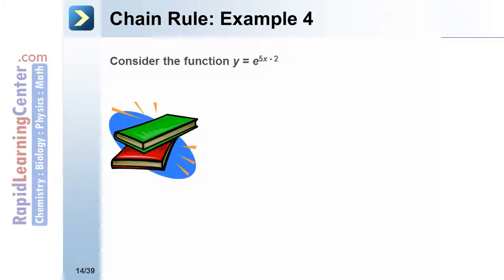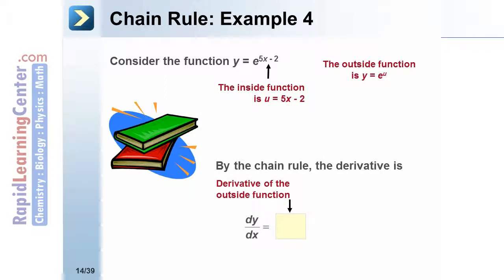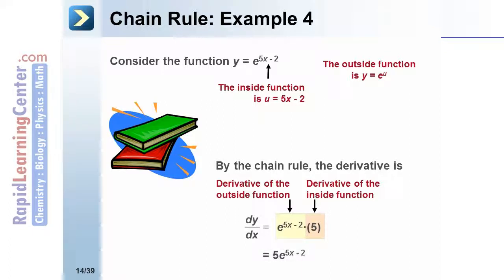Let's look at another example of the chain rule. Consider the function y equals e raised to the 5x minus 2 power. The inside function is the exponent 5x minus 2, while the outside function is e to the u. Applying the chain rule, the derivative of the outside function is e to the u, which since it is its own derivative, gives e to the 5x minus 2. The derivative of the inside function, 5x minus 2, is 5. Simplifying gives us 5 times e to the 5x minus 2 power.